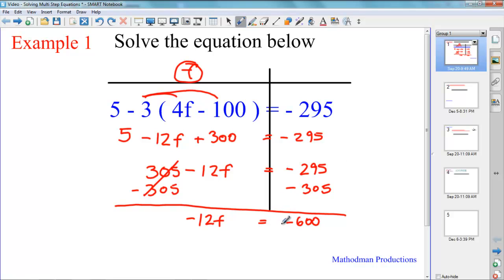Finally, we're left with a one step equation. All you gotta do is finish it off by dividing both sides by negative 12. And we get our answer as F equals 50.